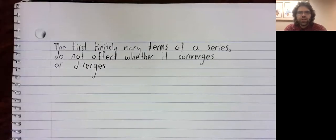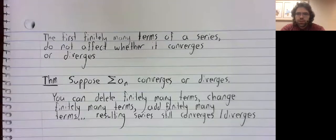Let's end with a very important result, that the first finitely many terms of a series do not affect whether the series converges or diverges. Formalizing that a little, suppose that some series converges or diverges.